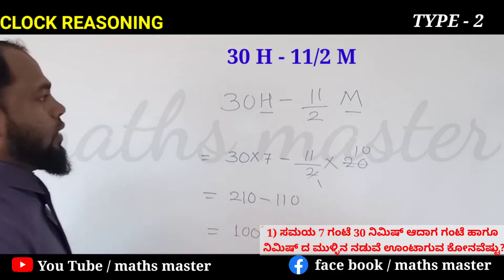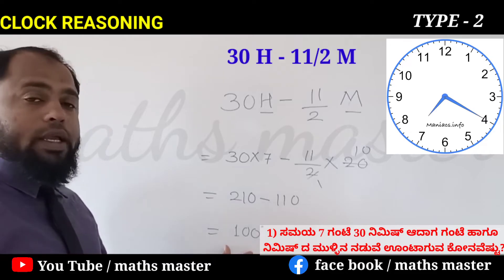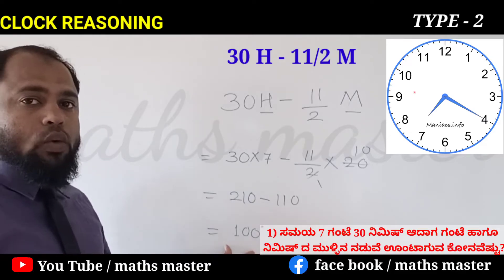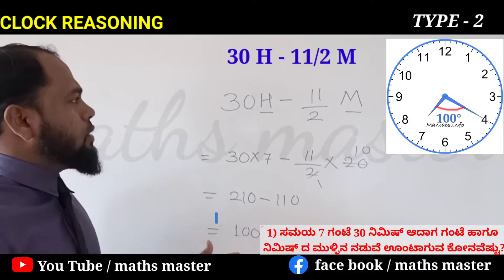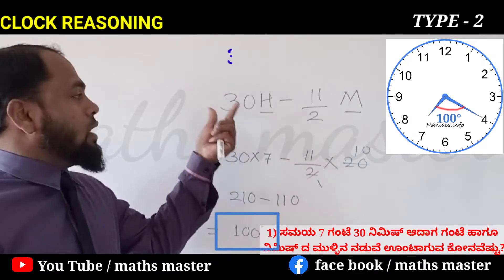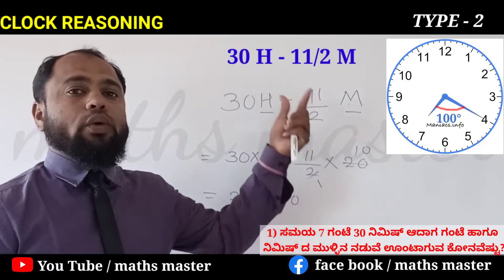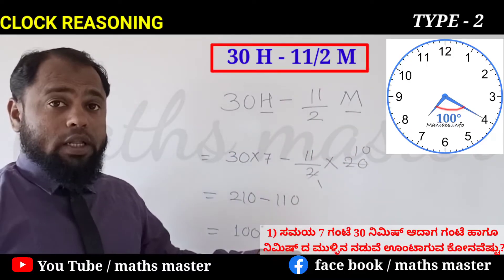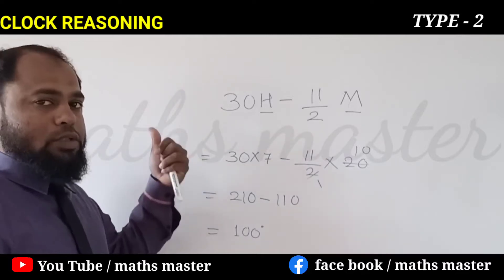The answer is 100 degrees. Very simple concept — you just have to remember the formula: 30H minus 11 by 2 into M. This formula gives us 100 degrees. Now come to the next problem.